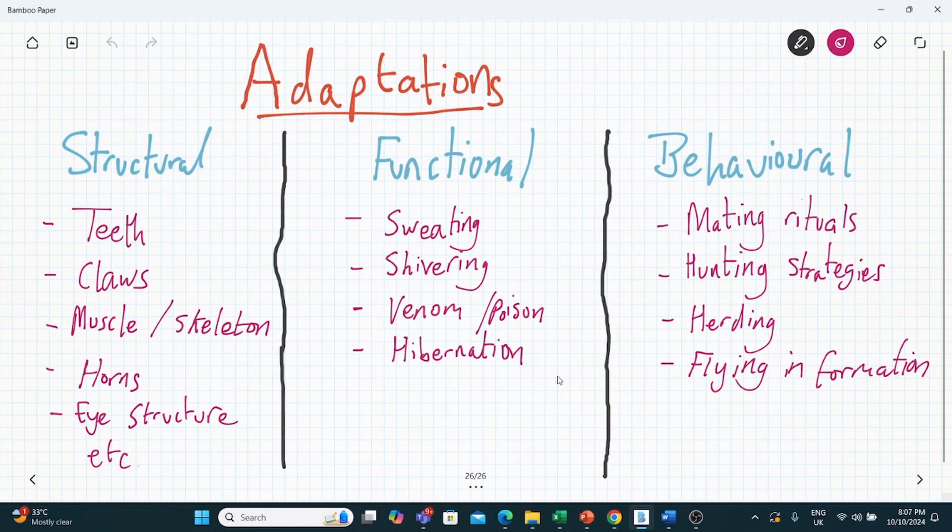So let's have a look at a few examples of adaptations. Structural is anything with a physical structure. You've got teeth, claws, muscle structure, skeletal structure, horns, eye structure, all of those things.